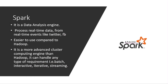Now let's come to Apache Spark. Spark is a data analysis engine that processes real-time data from real-time events like Twitter and Facebook. These websites are becoming increasingly dynamic, and you need to track all the transactions and activities taking place on them — real-time streaming, on-demand video, on-demand content. Spark is a very solid, scalable, and dependable software that monitors these events.